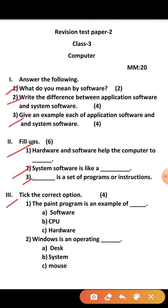You have to tick the correct option and fill also in the blank line. Options are software, CPU, and hardware. Second, Windows is an operating system. Options are desk, system, and mouse.